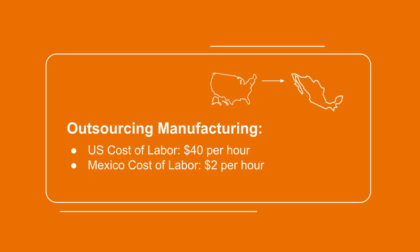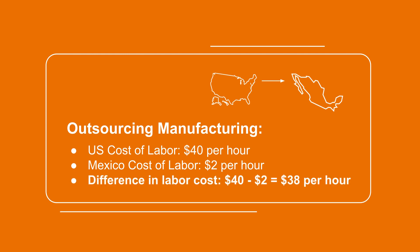Let's take a look at another example of a decision to be made with two alternatives: make or buy. If a US company wants to outsource its manufacturing operations to Mexico, one of the relevant costs is labor. The company has to compare the cost of labor in the US — around $40 an hour — with the cost of labor in Mexico — around $2 per hour. The difference in labor cost is around $38 per hour.